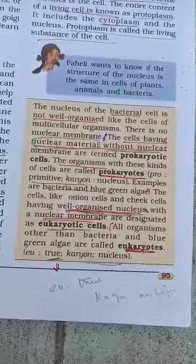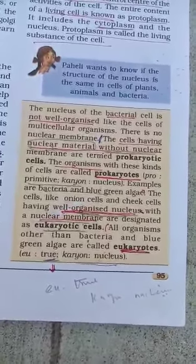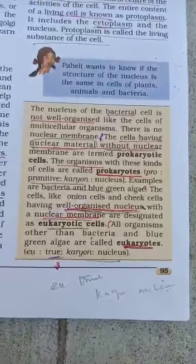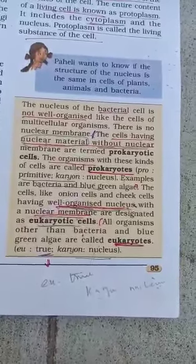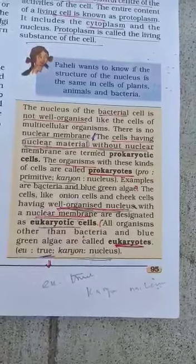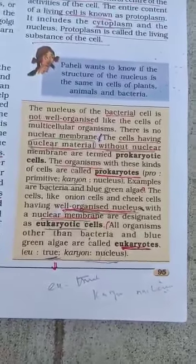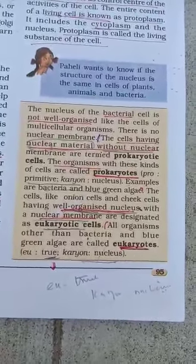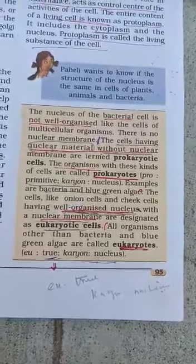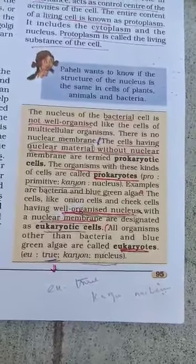The nucleus of bacteria cells is not well organized like the cells of multicellular organisms. In single-cell organisms the nucleus is not well organized — there is no nuclear membrane.